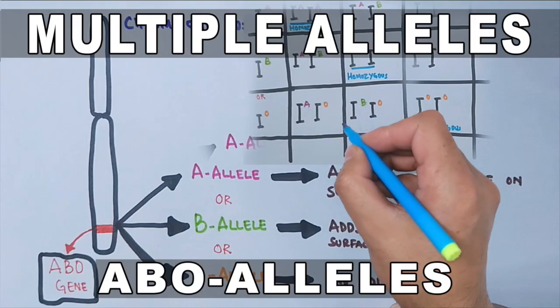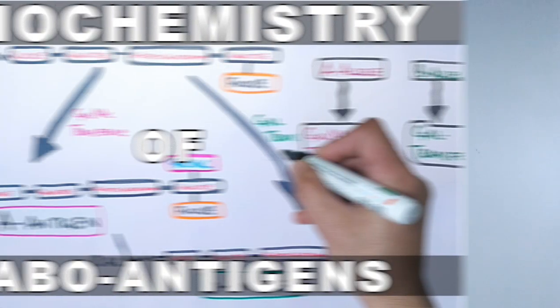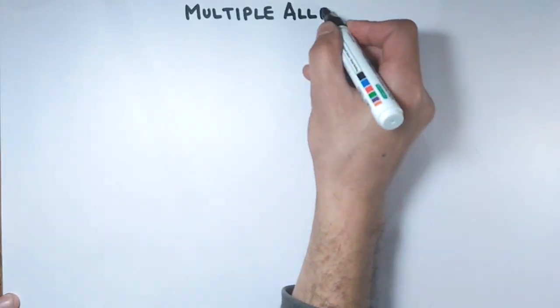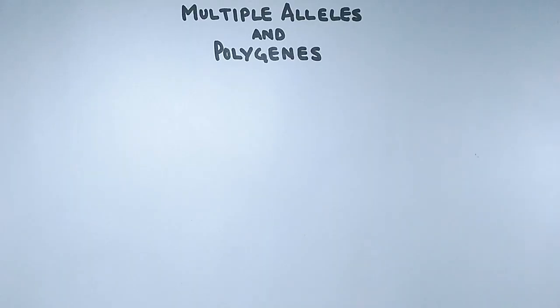In the series of videos we have been discussing multiple alleles, then we had a lecture on ABO blood group system. Now in order to contrast these multiple alleles with polygenes or polygenic inheritance, we will discuss their differences in detail.